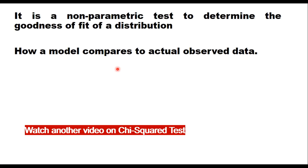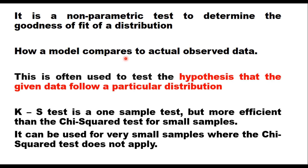Similar to the chi-square test, the KS test is also a non-parametric test to determine the goodness of fit of a distribution. But it is applied to the cumulative distribution function only, where the CDF varies from 0 to 1. It determines how a model compares to actual observed data and is often used to test the hypothesis that given data follow a particular distribution. The KS test is a one-sample test but more efficient than the chi-square test for small samples, and can be used for very small samples where the chi-square test does not apply.